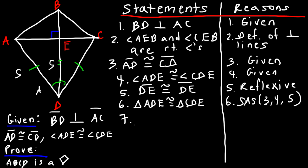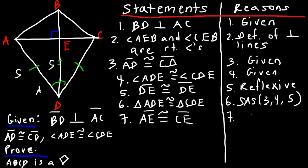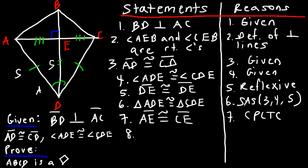Now that we've shown the two triangles are congruent, statement seven: AE is congruent to CE, based on CPCTC — corresponding parts of congruent triangles are congruent. In step eight we can then say BD is the perpendicular bisector of AC, by the definition of perpendicular bisectors.